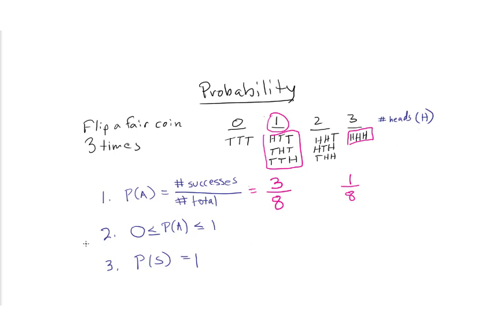Rule number two: probabilities of events range between zero and one. Zero is impossible — it cannot happen. One is absolutely certain. And in between is our full range of probabilities on a percentage or fractional basis. Rule three: the probability of the sample space S — all possible outcomes, eight in our coin flip scenario — must sum to one. The sum of probabilities of getting zero, one, two, or three heads must equal one, because there are no other possible outcomes.